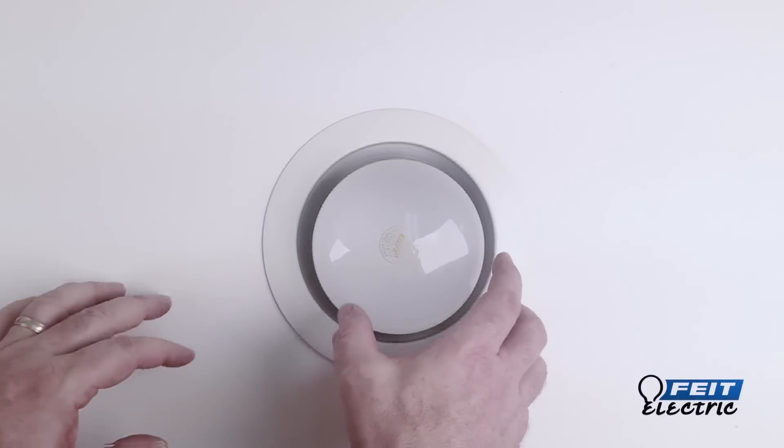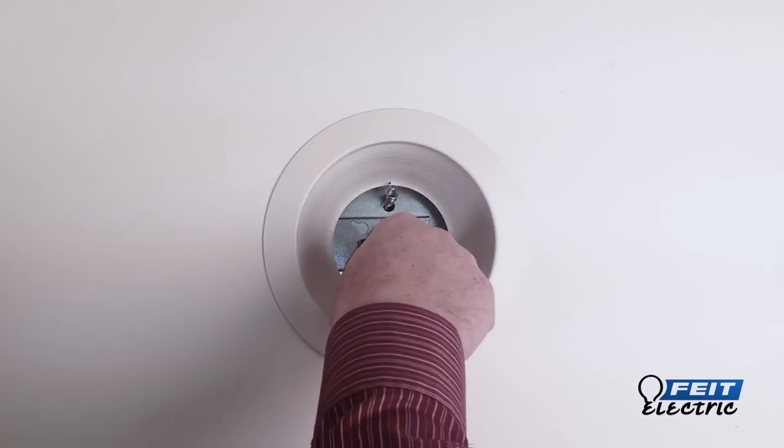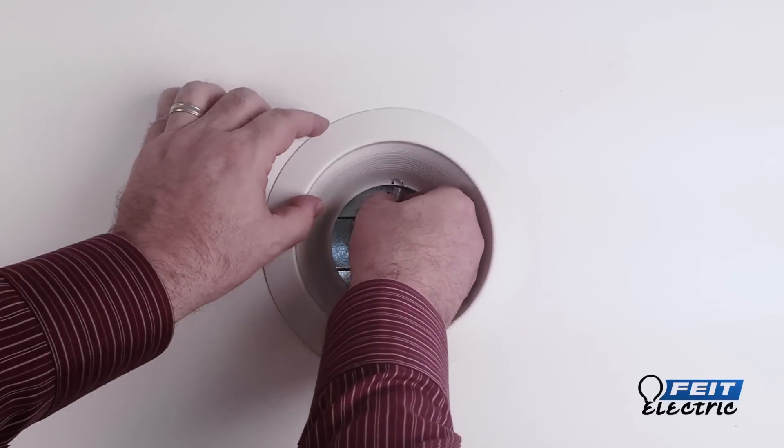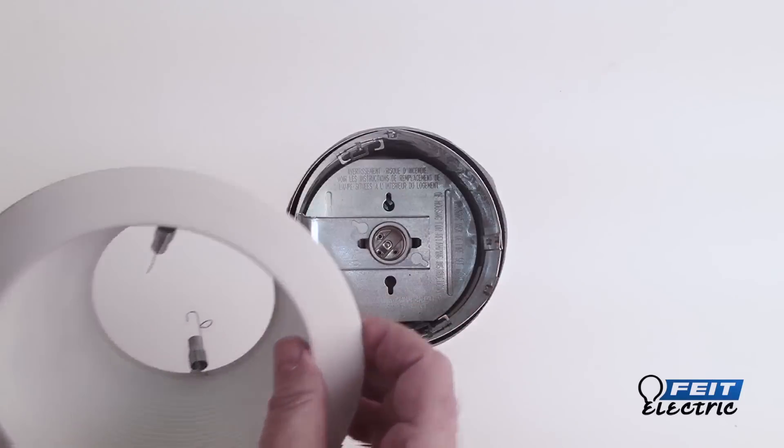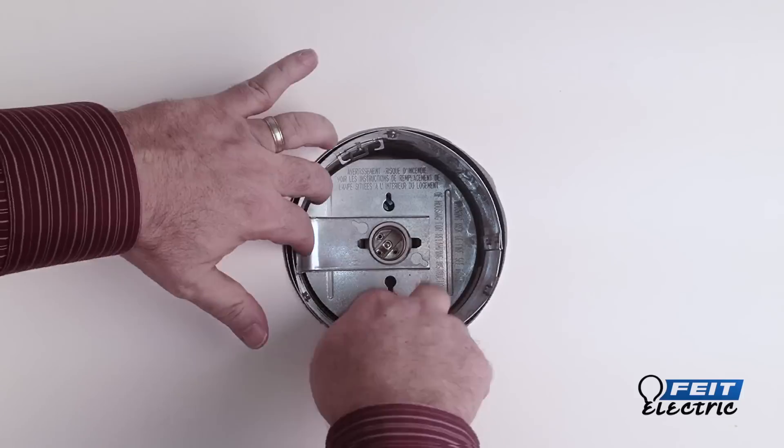If the lamp and trim are already installed, they need to be removed. Next, slide the lamp holder bracket.